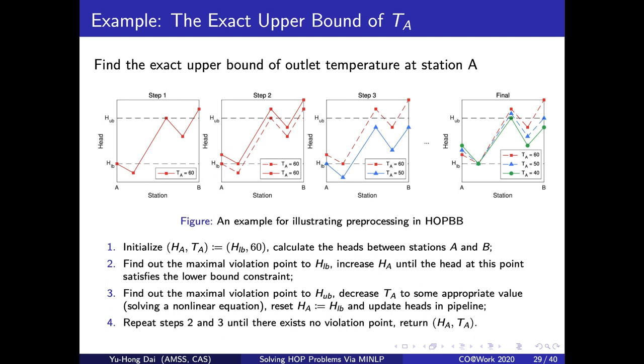We show the basic procedure of the pre-processing with this example. To find out the exact upper bound of the outlet temperature at station A, we repeat this four-step procedure. First, the scheme is initialized with the lowest head and the highest temperature. Then in the second step, we modify the head so that all the head values satisfy the lower bound.